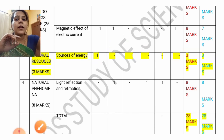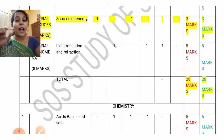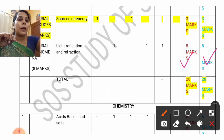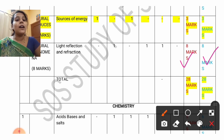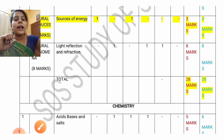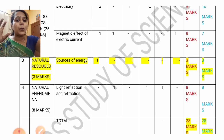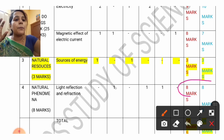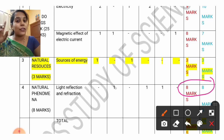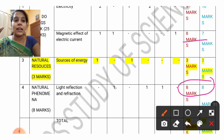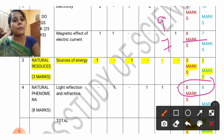Next, Light Reflection and Refraction — a lesson from the Natural Phenomena theme. Model question paper 1 has 8 marks and model question paper 2 also has 8 marks. There is no change. Complete this lesson fully to score 8 marks. So for physics: Electricity — 9 to 10 marks, Magnetic Effect of Electric Current — 7 to 8 marks, and Light Reflection and Refraction — 8 marks.